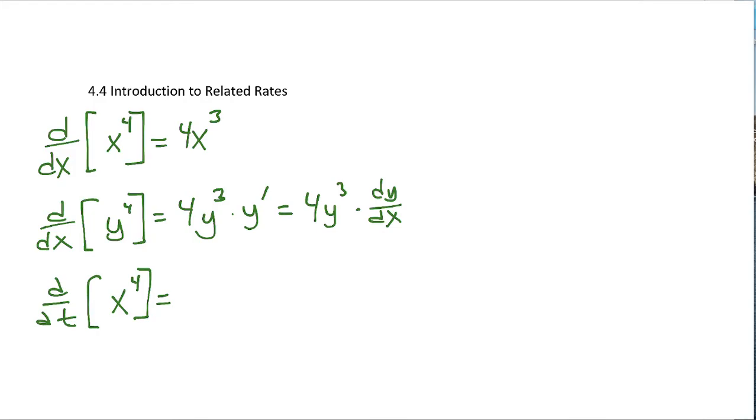We're not doing any new rules, but it's going to be more like when we're differentiating y to the fourth with respect to x. Notice that the variables don't match on this one either. I'm differentiating with respect to time, so this actually becomes 4x to the third times dx/dt.